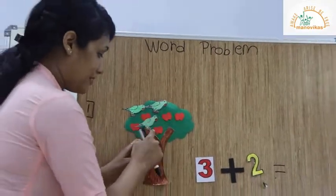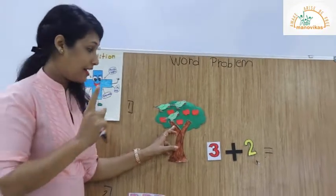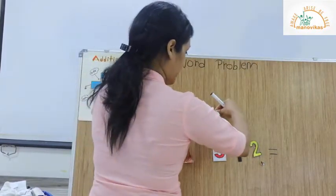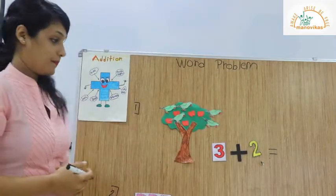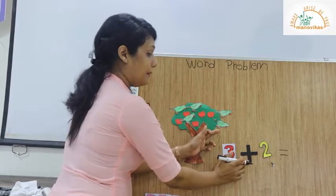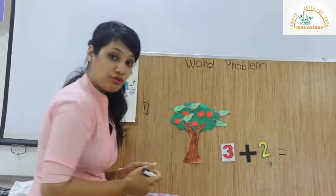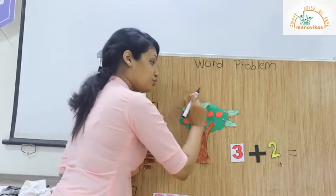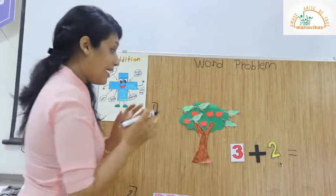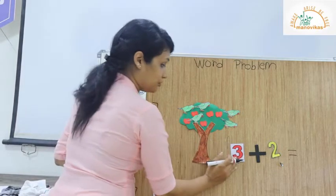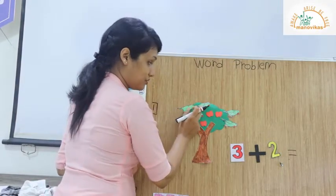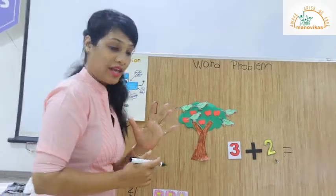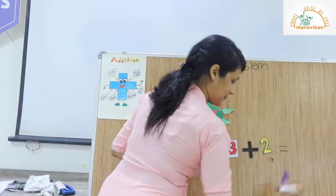There are 3 parrots on the tree. 2 more join. So there are 3 parrots plus 2 more joining. We have to count all together — see the keyword 'all together'. So 3 plus 2: 1, 2, 3, 4, 5. There are 5 parrots all together on the tree. The answer is 5.